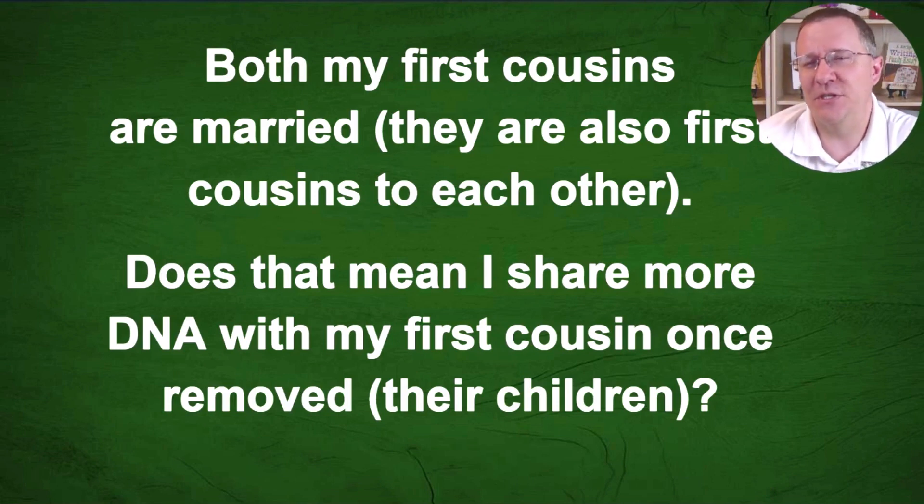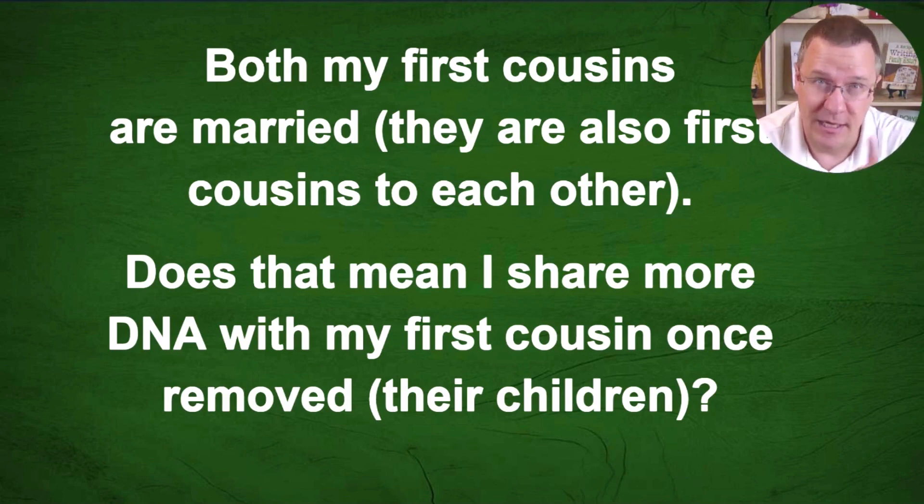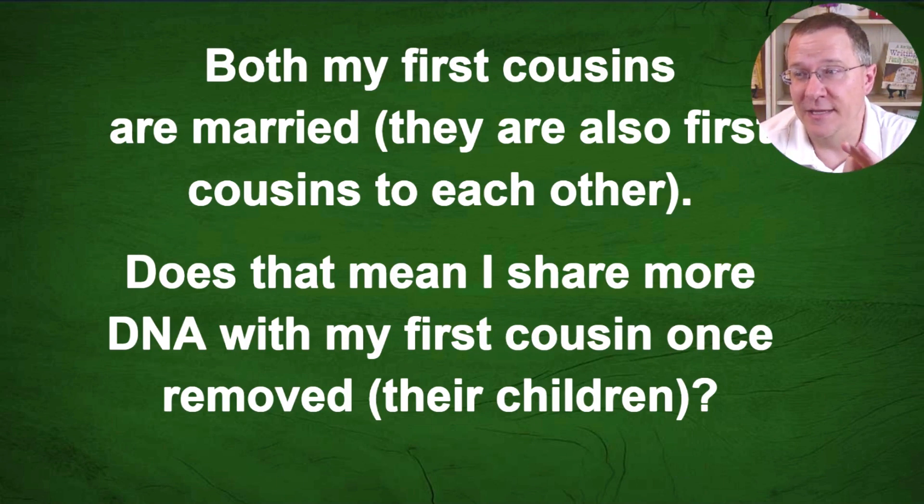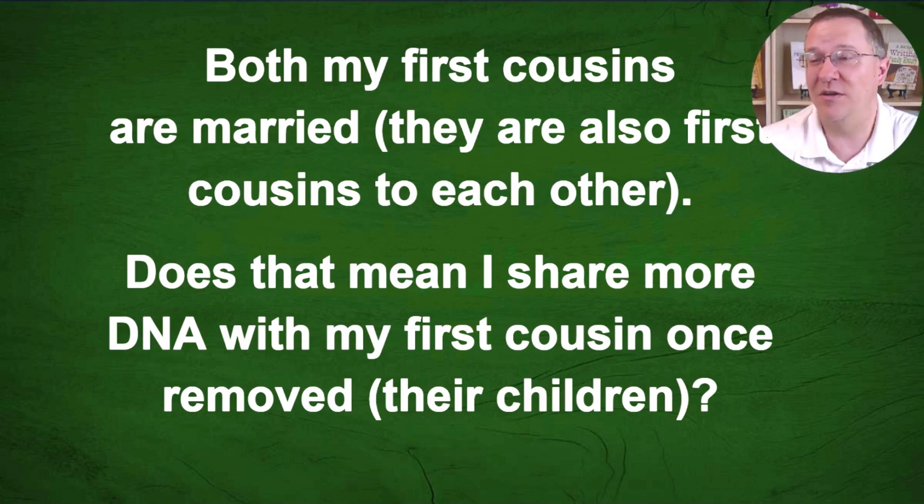Both my first cousins are married. They are also first cousins to each other. Interestingly, from a historical standpoint, it is actually estimated that the majority of marriages from history were this type of marriage, two first cousins or maybe second cousins. While it may be unusual nowadays, from a historical standpoint, which means from a genealogical standpoint, that's the way most of the marriages are. And so that's why this is an important question.